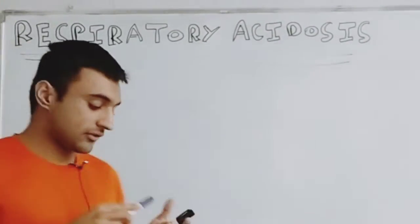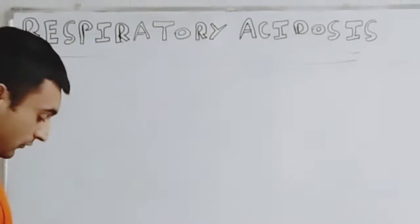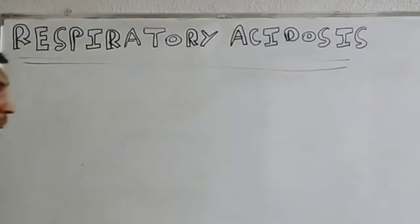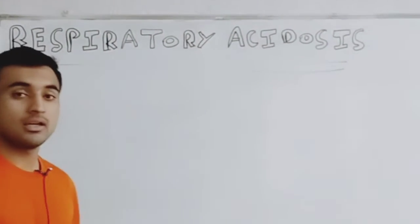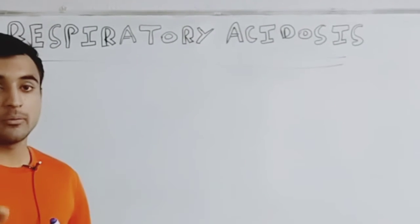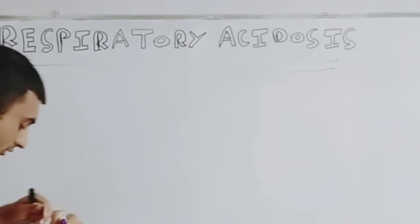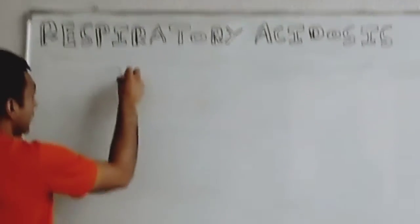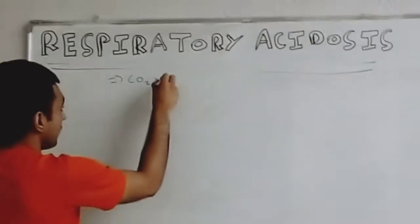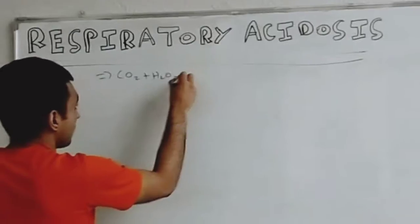We will study the different aspects of respiratory acidosis. First of all, the important point to keep in mind is that carbon dioxide remains in the blood in the form of carbonic acid. Whenever there is excessive carbon dioxide, it combines with water and forms carbonic acid.